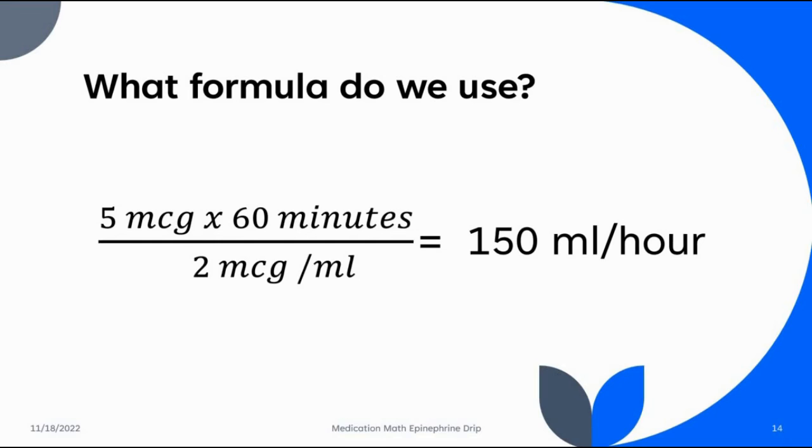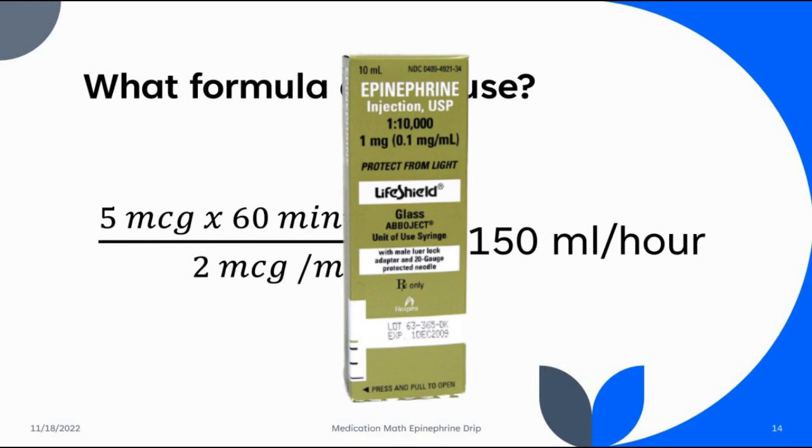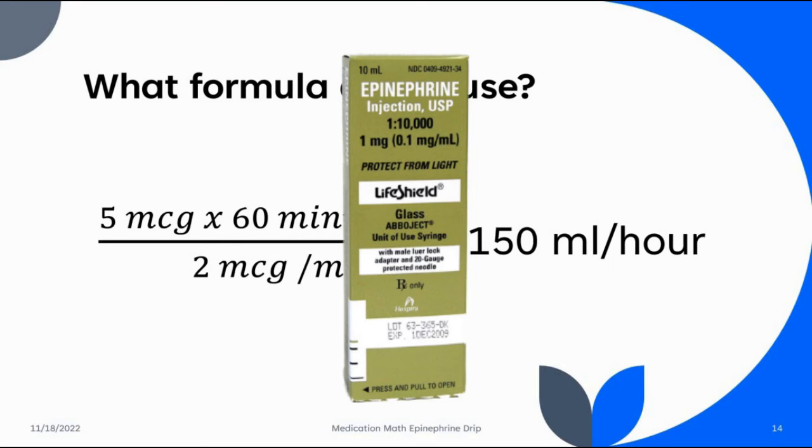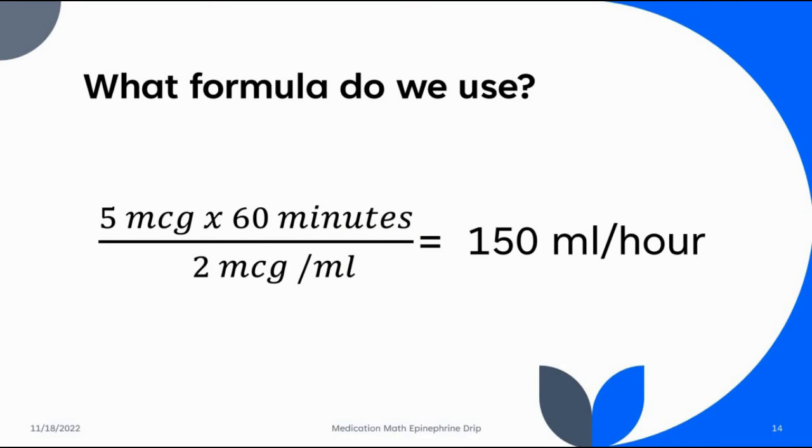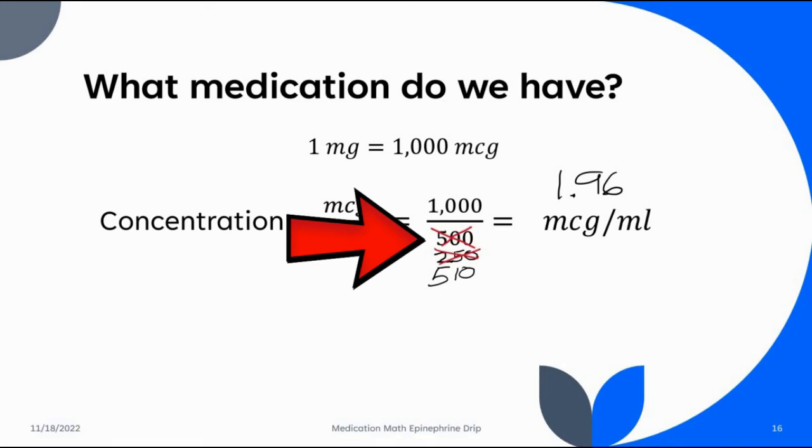You remember in the beginning when we talked about what if I use that larger container of epinephrine - the cardiac epi, which is 10 milliliters? How far off does that throw the math? Let's answer that question. On the bottom here, instead of 500 milliliters, we're going to have to put 510 milliliters in order to do the calculation. A thousand divided by 510 gets you 1.96 for your concentration.